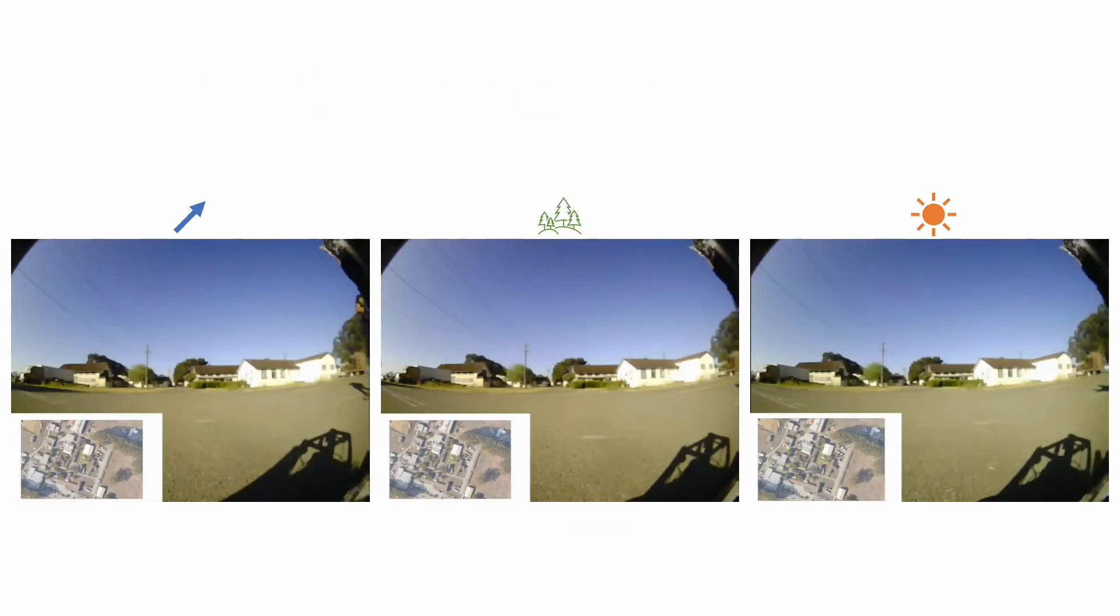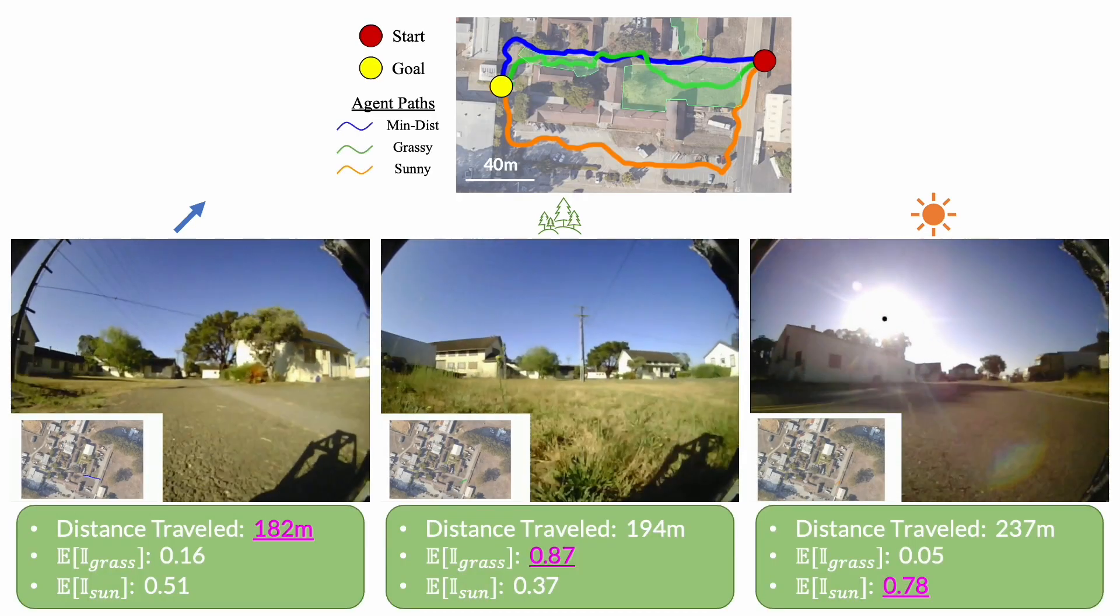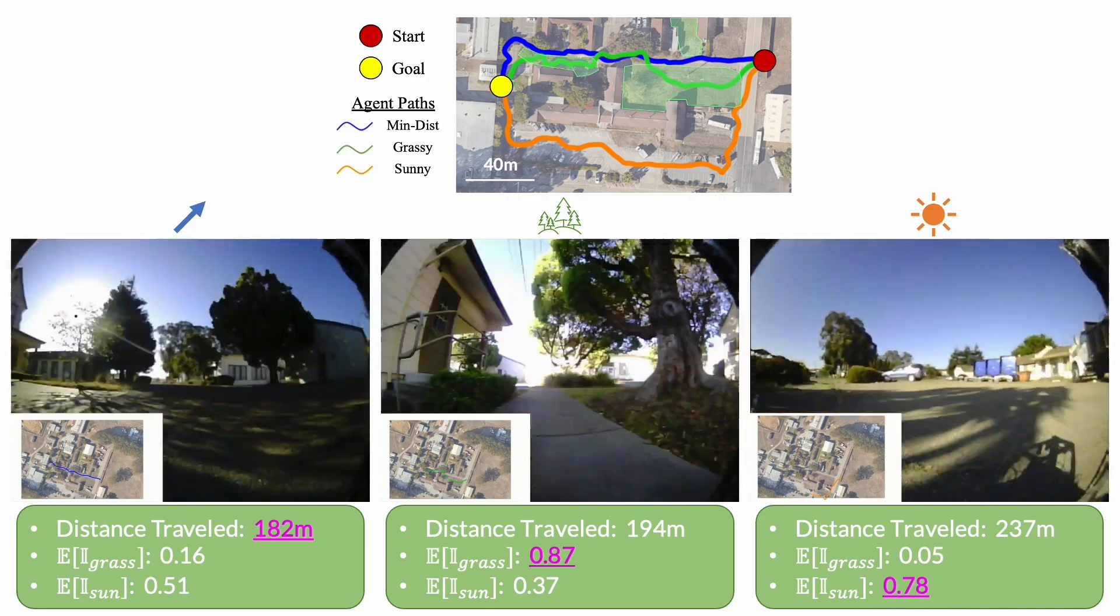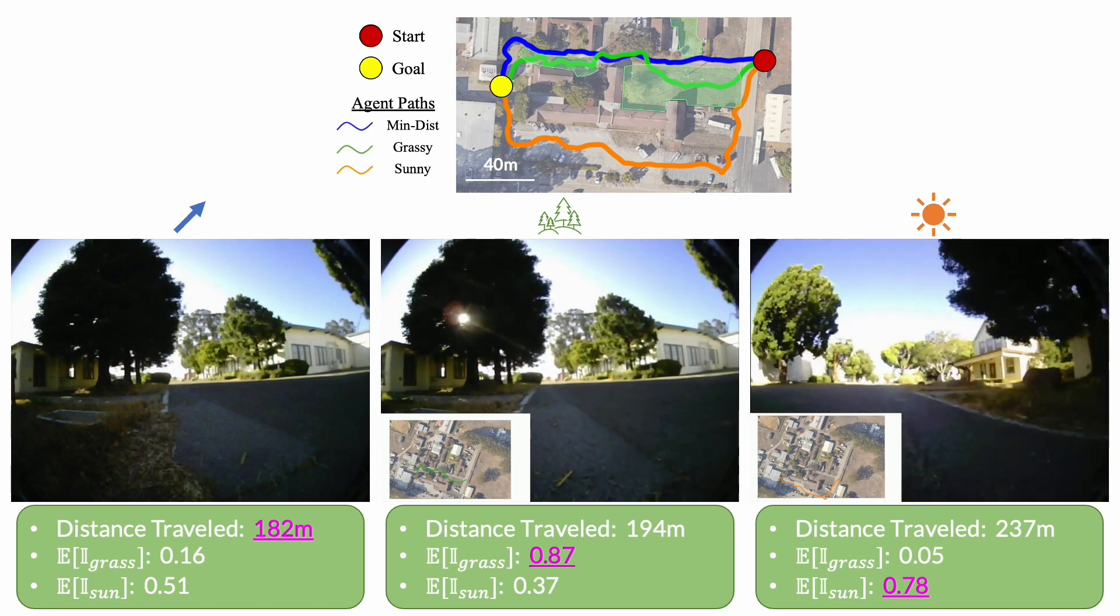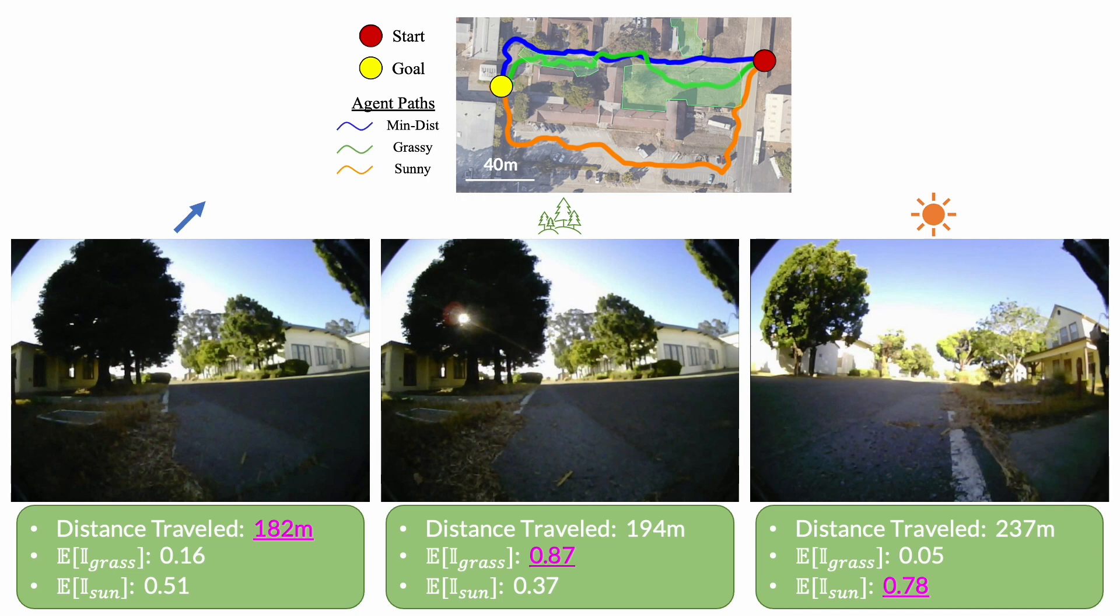Now let's look at some results for the goal reaching with our system for the same start and goal position. Here we have learned behaviors of three different reward functions. A simple minimum distance policy on the left, driving on the grass in the middle, and driving in the sun on the right. Starting in the same position with the same goal, we notice the policies take different routes to each goal. The metrics at the bottom convey this quantitatively, where the first policy takes the shortest distance, whereas the other policies maximize the amount of time on grass and in the sun respectively.